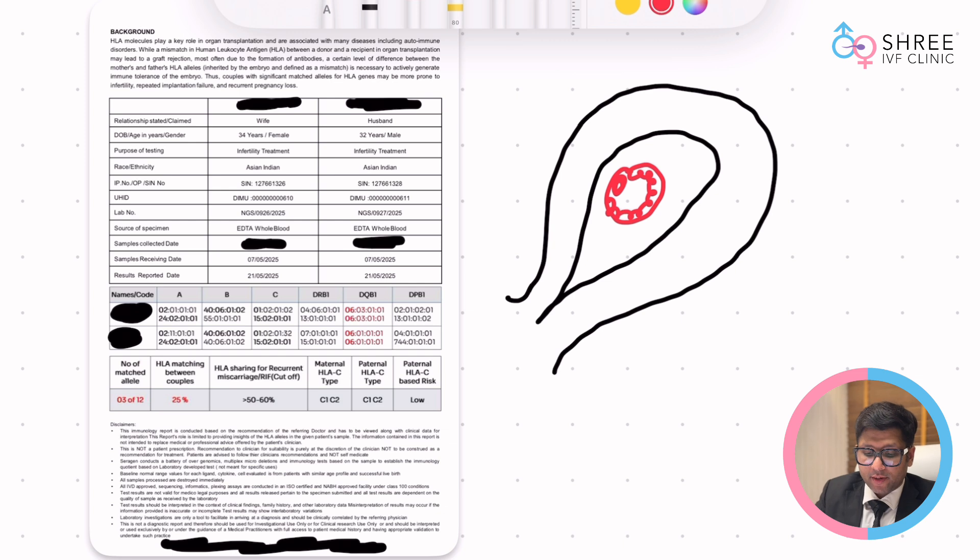Here is a sample HLA report in front of us. You must understand that when the embryo goes inside the uterus, the predominant presenting antigens are HLA C and HLA G, and both of them go and interact with uterine natural killer cells.